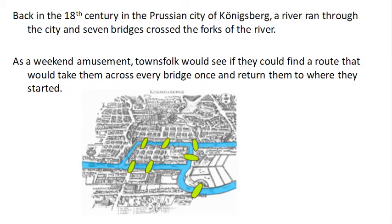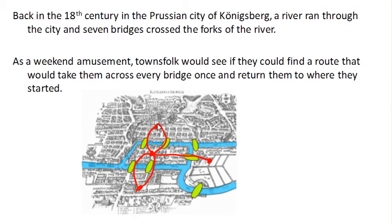Now that we've talked about Euler Circuits, let's return back to this bridges problem. The idea was the Townsville folks would see if they could find a route that would take them across every bridge once and return them to where they started. We represented this as a graph by introducing a vertex for each of the land masses and then an edge for each of the bridges that could be taken to walk from one land area to another.